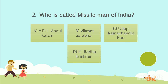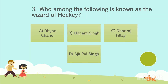Who is called Missile Man of India? Option A: APJ Abdul Kalam. Option B: Vikram Sarabhai. Option C: UDP Ramachandar Rao. Option D: K Radhakrishnan. Your time starts now. The answer is Option A, APJ Abdul Kalam.